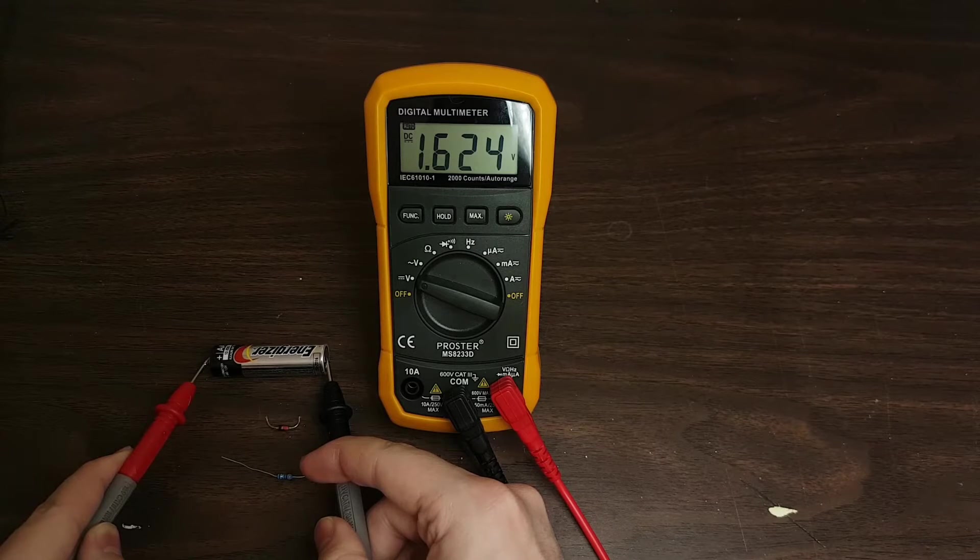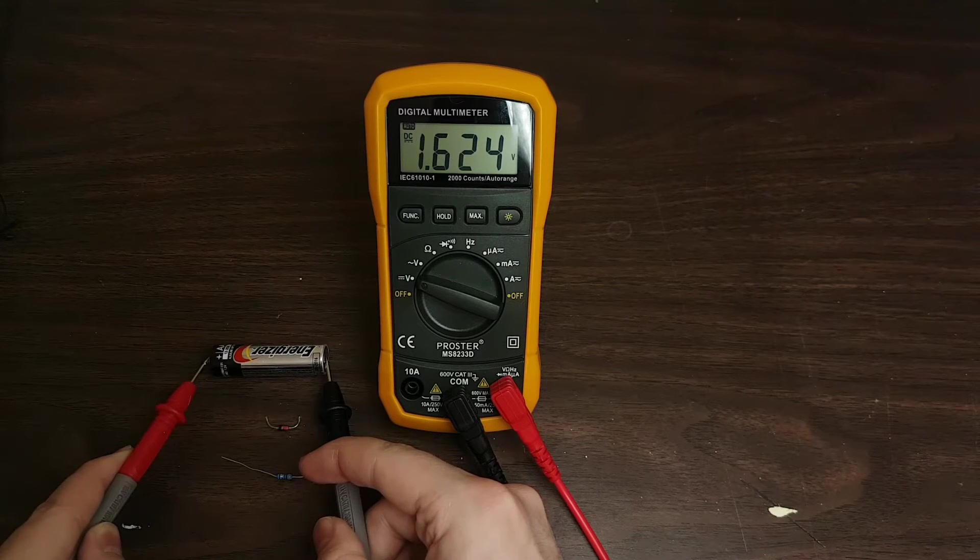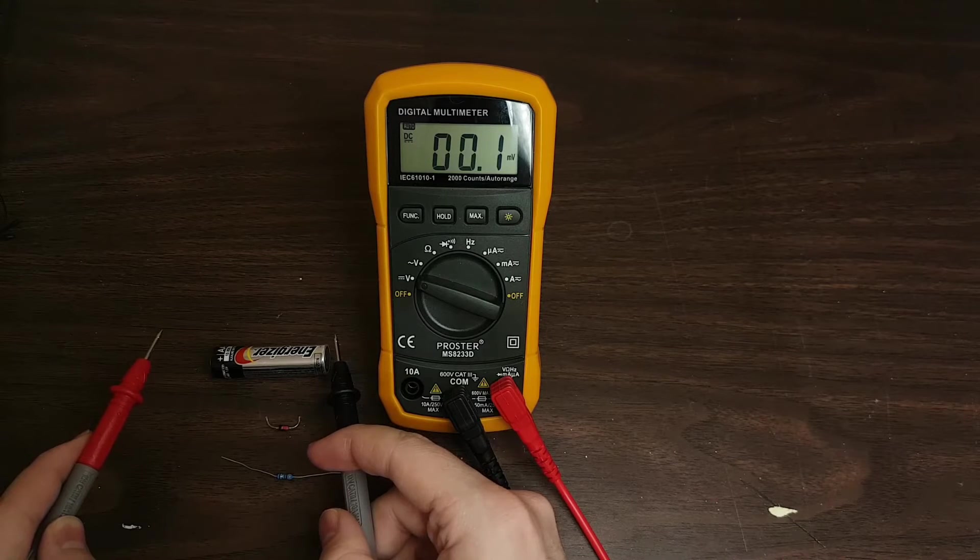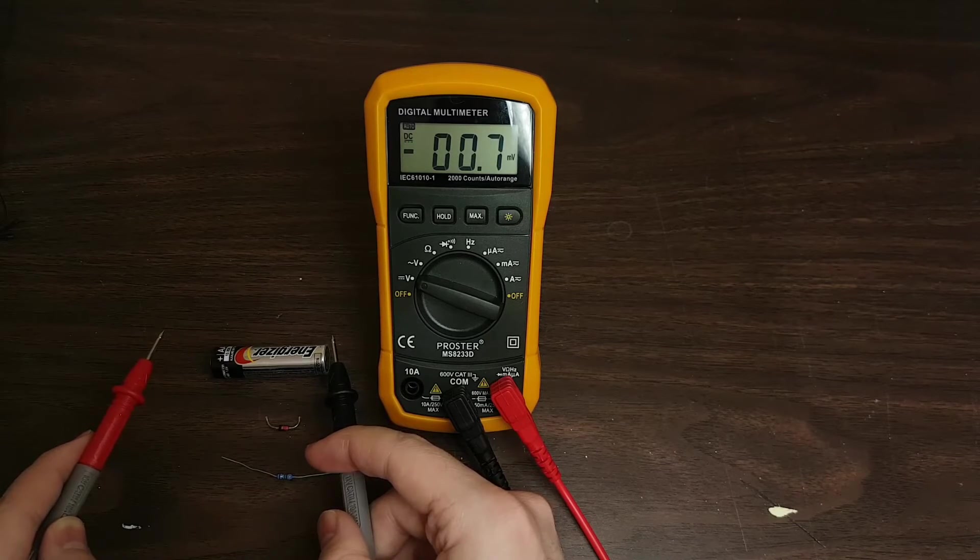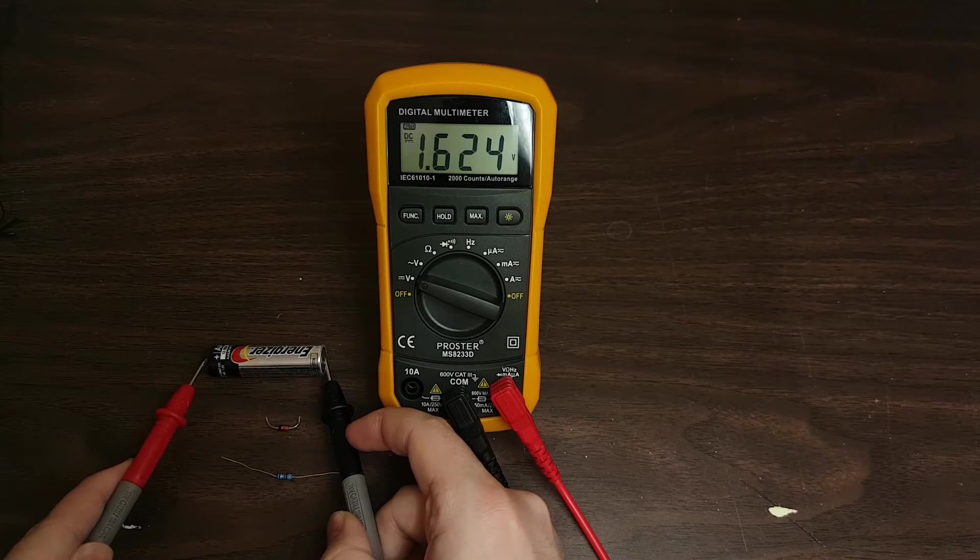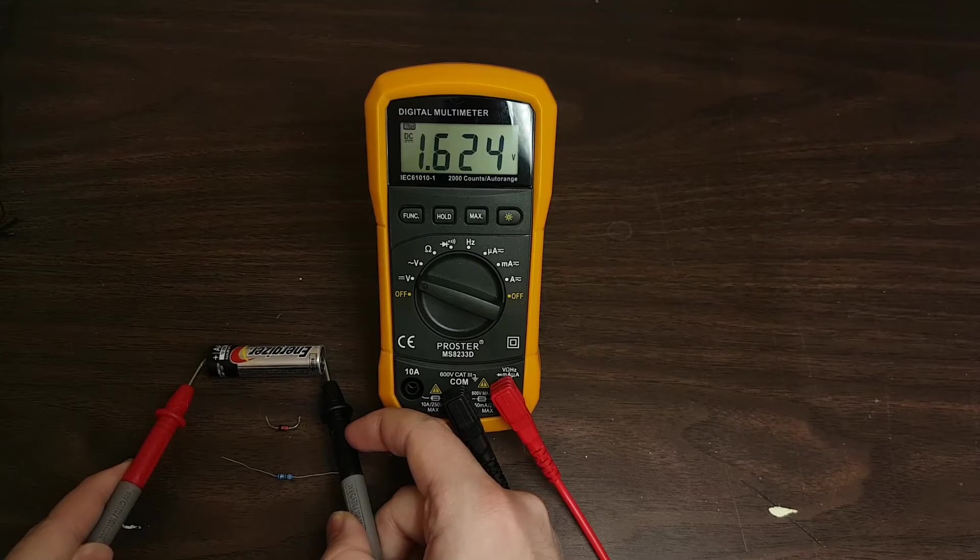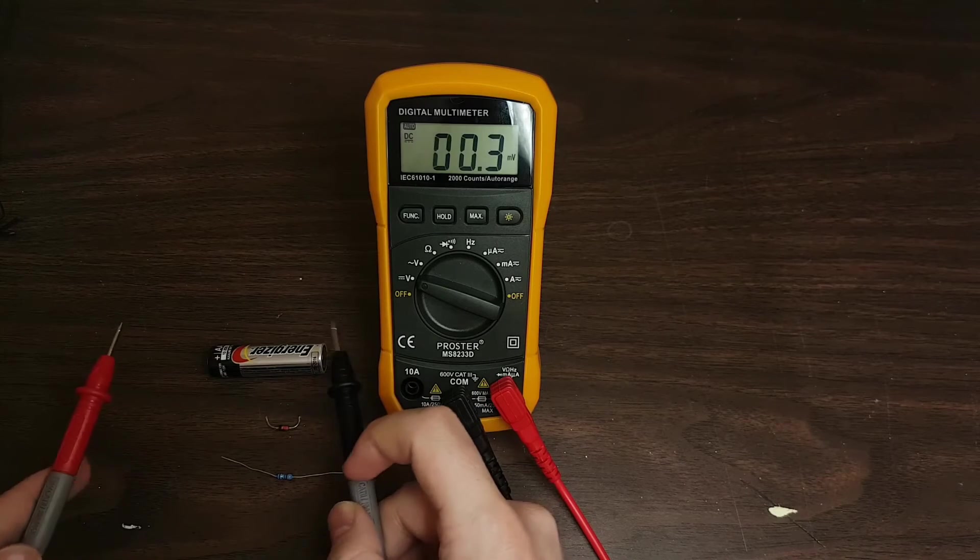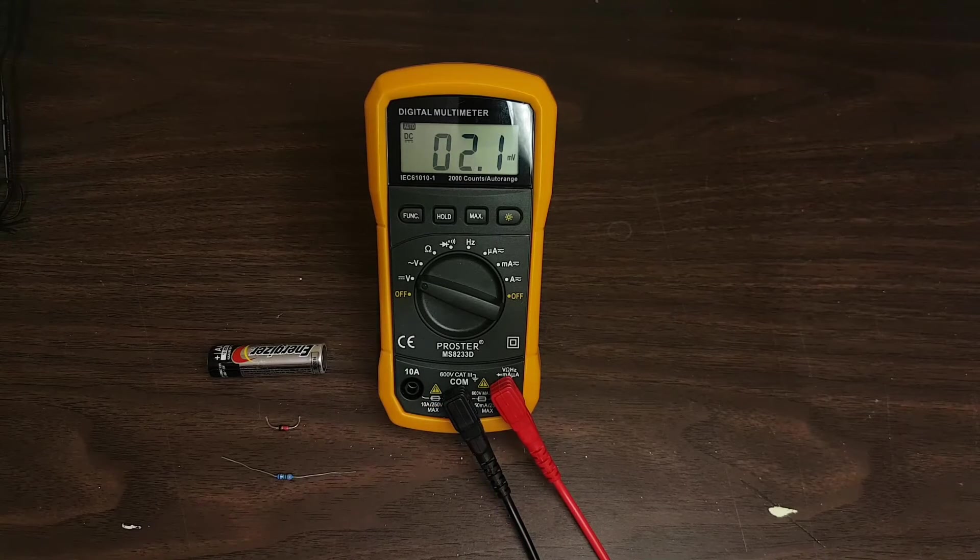Detects the battery, sees it at 1.624 volts. It's actually quite quick about the auto-ranging there.